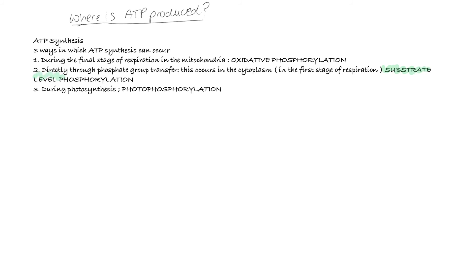This process of making ATP directly in a single step reaction in the cytoplasm is known as substrate-level phosphorylation. When ATP is produced during respiration in the mitochondria, which occurs in both plants, animals, fungi, protists, this is known as oxidative phosphorylation.